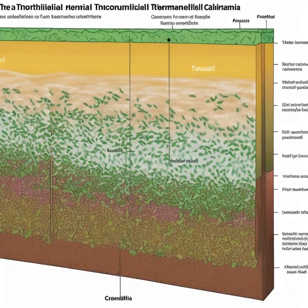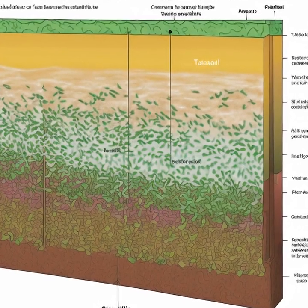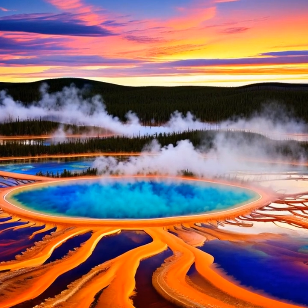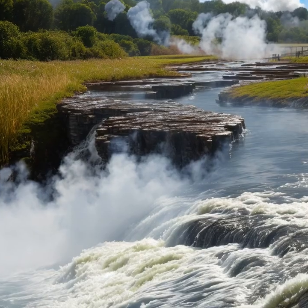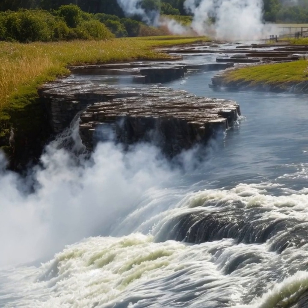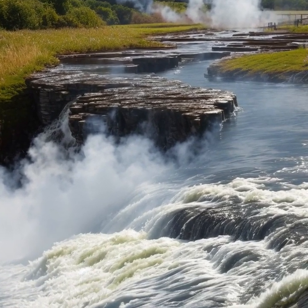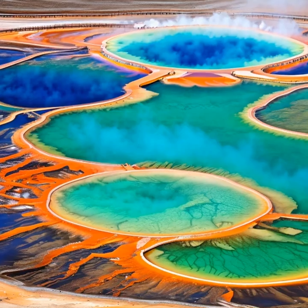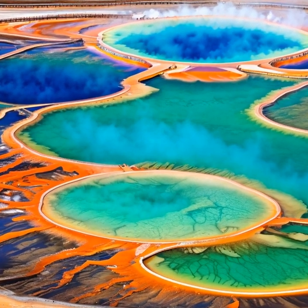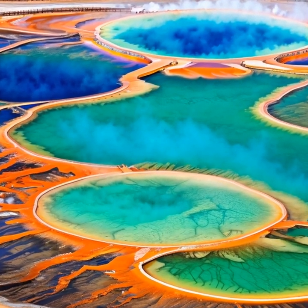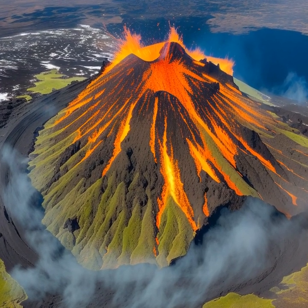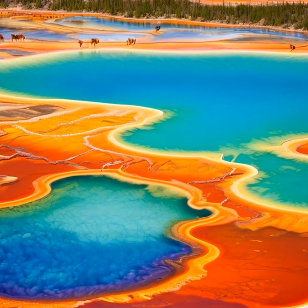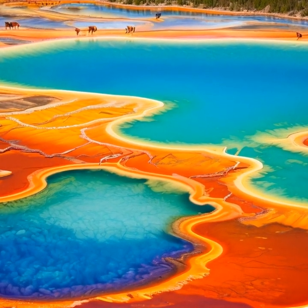The availability of nutrients is another important factor influencing the distribution of pigmented bacteria in the spring. The hot water rising to the surface carries dissolved minerals and other nutrients from deep within the Earth's crust, providing essential building blocks for the growth and survival of microbial communities. However, the concentration of nutrients can vary across the spring, leading to variations in the density and composition of the microbial mats. Factors such as water flow, the presence of other microorganisms, and even the weather can impact nutrient availability, ultimately affecting the distribution and vibrancy of the pigmented bacteria.